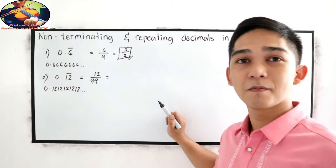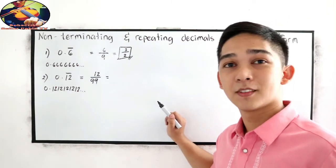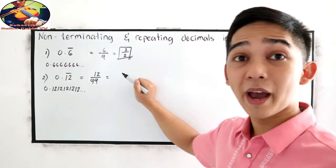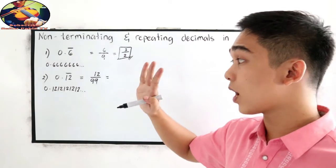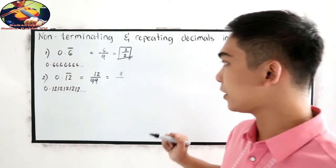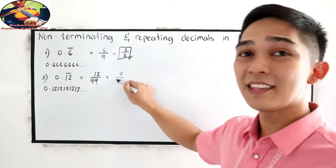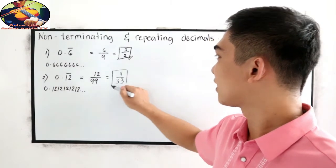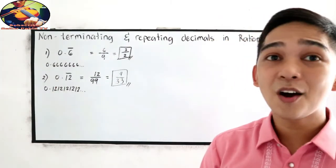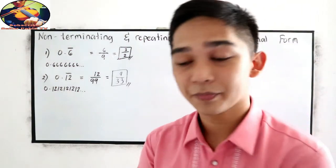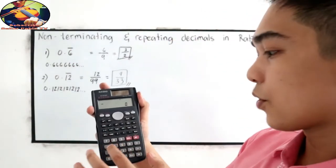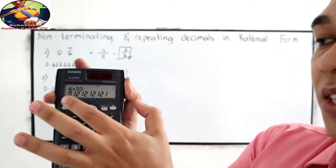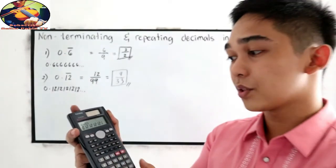12 over 99 is divisible by 3 — giving us 4 over 33. Let us check using our calculator: 4 divided by 33 gives 0.1212121212121. Correct.